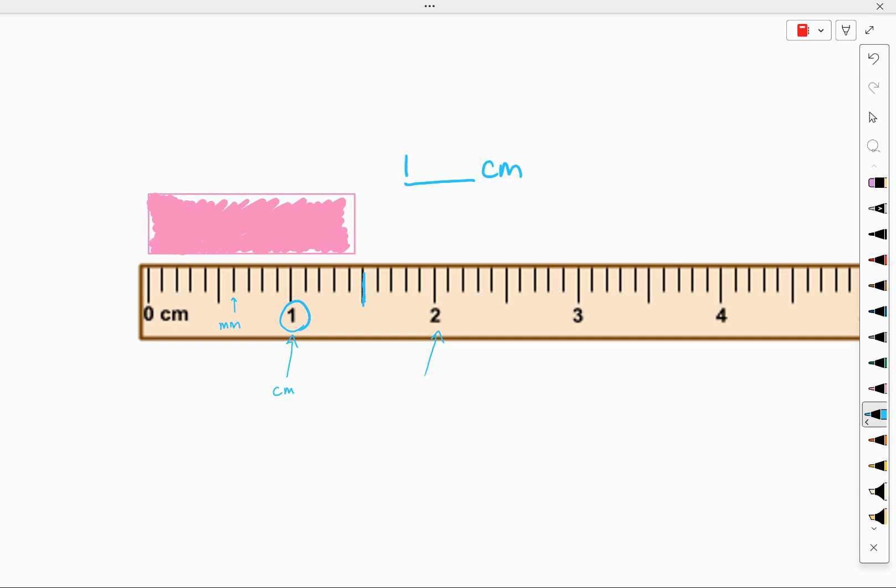So when measuring this, we would look at each of the smallest divisions. Again, those are tenths. So we can write that as a decimal number. The tenths place is here.